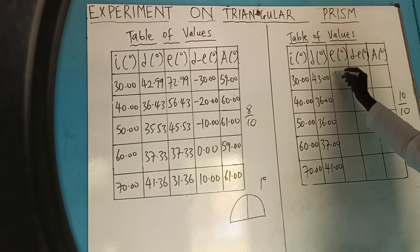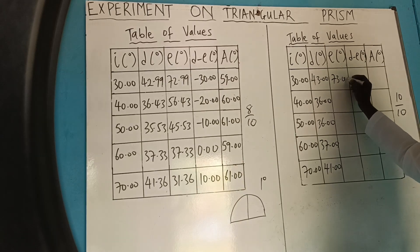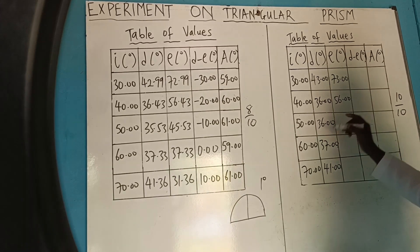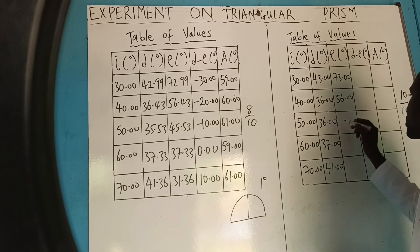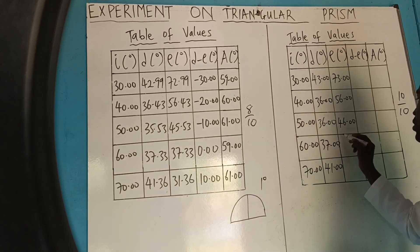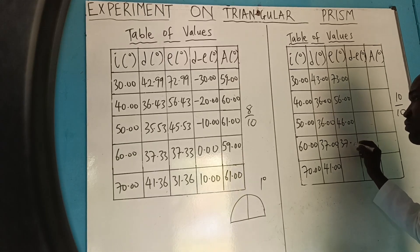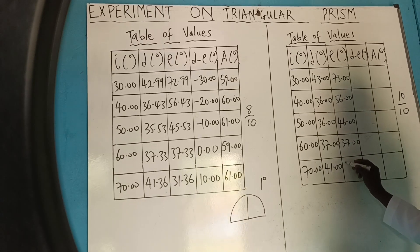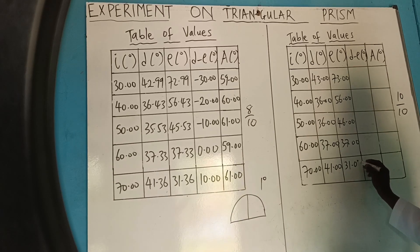Then, the next one is 73.00, 56.00. Then, this one is 46.00, 37.00, and 31.00.